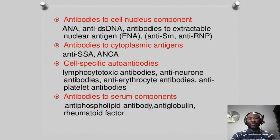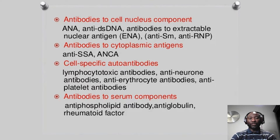We also have antibodies directed against other structures within larger cells, such as anti-platelet antibodies or against red blood cells. If patients have antibodies directed against platelets, these patients may have thrombocytopenia — we refer to that as immune-related thrombocytopenia. Or you can have autoantibodies against serum components, such as rheumatoid factor or anti-phospholipid antibodies, which are implicated in anti-phospholipid syndrome where patients have clotting disease.